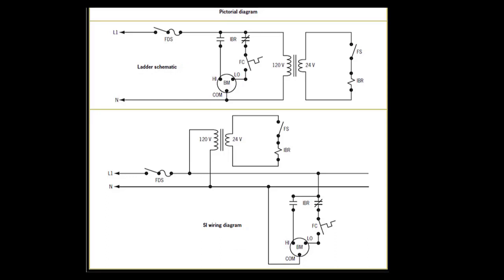When FS is open, the IBR coil is de-energized. At this point, the normally closed contacts remain closed, and the normally open contacts remain open. When FC is closed, the BM runs on low speed.